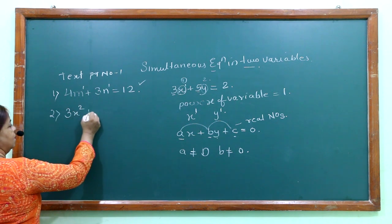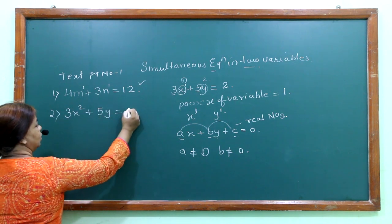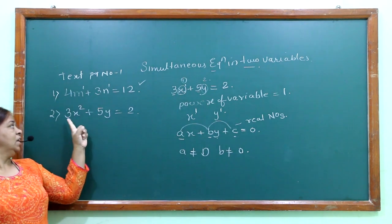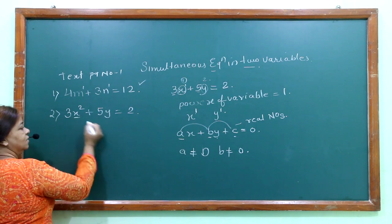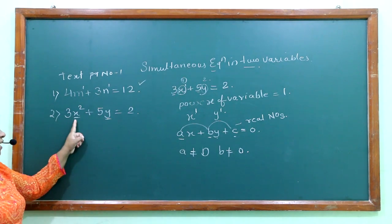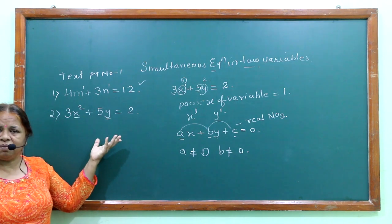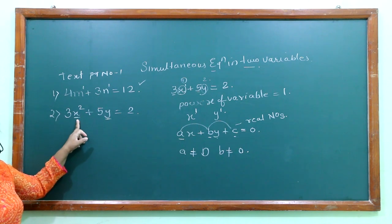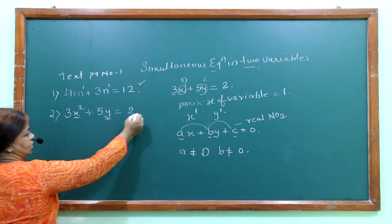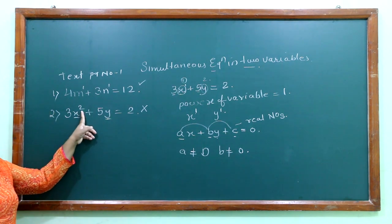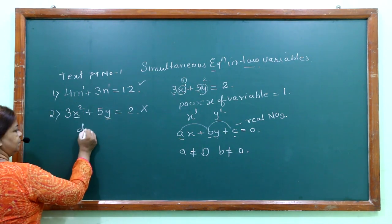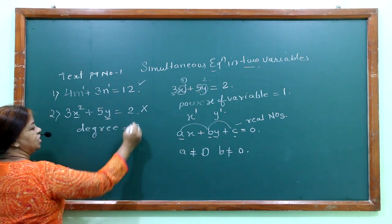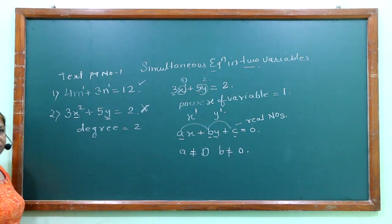Now the second equation: 3x squared plus 5y equals 2. Here we have variable x and variable y, so there are 2 variables. But is it a simultaneous equation in 2 variables? It is not. The reason is that the degree of the x variable is 2, and therefore this equation is not a simultaneous equation in 2 variables.